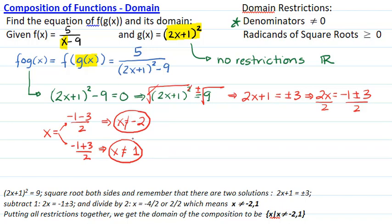Putting all the restrictions together, I can determine that the domain of the composite function is all real numbers x such that x ≠ -2 and x ≠ 1.